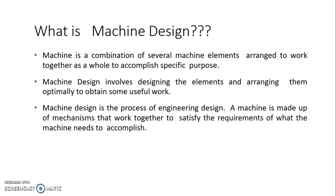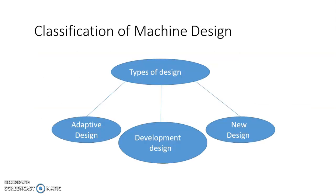A machine consists of a number of mechanisms working together to satisfy the machine's requirements. In general, machine design is the combination of machine and design principles to arrange elements and obtain the required output. There are three types of design: adaptive design, development design, and new design.